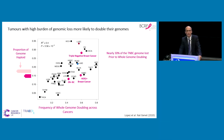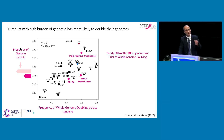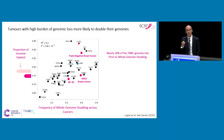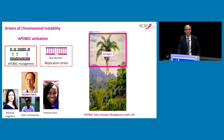We hypothesized that the frequency of whole genome doubling across cancers would correlate with the proportion of the genome lost to haploid loss of heterozygosity prior to genome doubling — and that is indeed the case. There's a strong correlation between the proportion of the genome lost prior to genome doubling and the frequency at which cancers undergo genome doubling, with triple negative breast cancer among the highest: 30% of the triple negative breast cancer genome is lost prior to whole genome doubling, forcing the cell to double its genome.